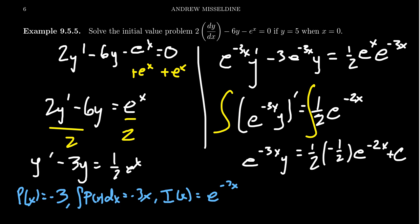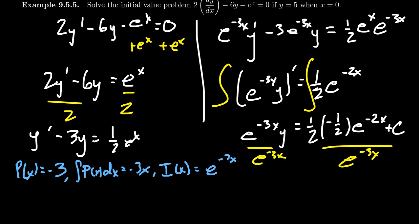Dividing both sides by e to the negative 3x — making sure to apply it to everything — and comparing powers of e: the right-hand side simplifies to negative 1/4 e to the x plus c times e to the 3x, since dividing e to the negative 2x by e to the negative 3x gives e to the x, and a negative exponent in the denominator becomes a positive exponent in the numerator. This is our general solution.